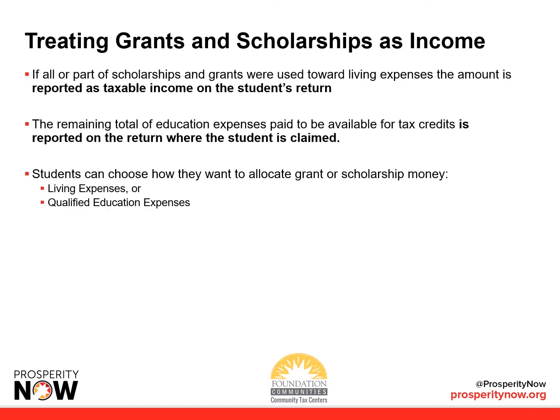If all or parts of scholarships and grants were used toward living expenses, the amount is reported as taxable income on the student's return. The remaining total of education expenses paid, available for the tax credit, is reported on the return where the student is claimed.